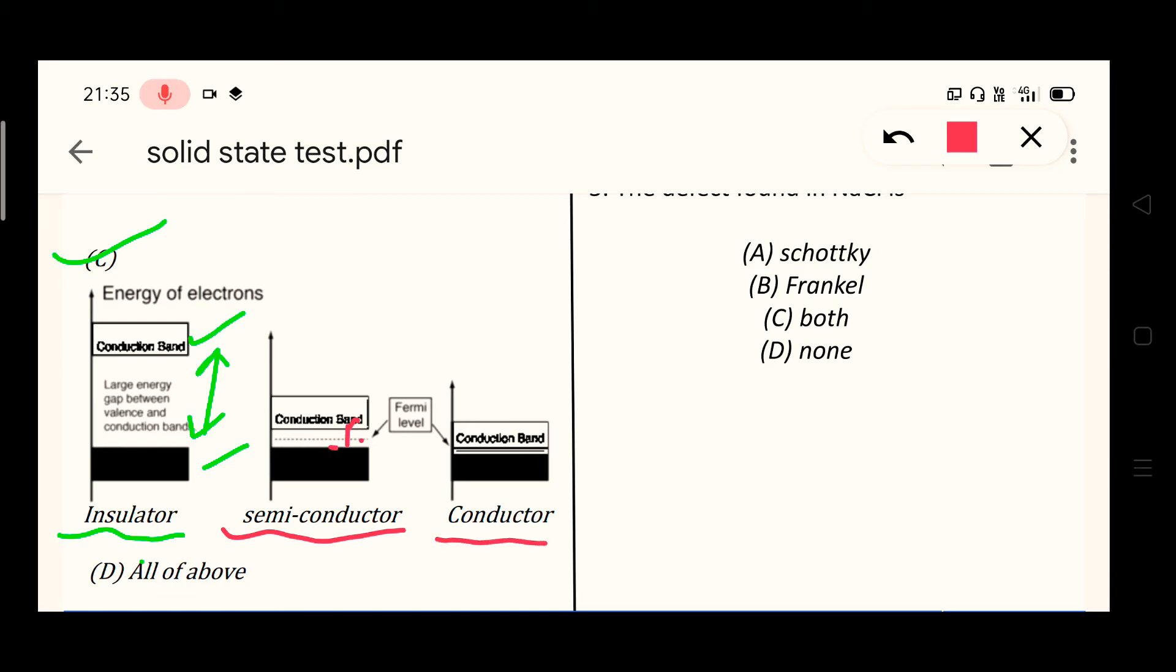And in conductor there is no gap or partially overlapped conduction band and valence band. So there is no energy gap between conduction band and valence band, so it is conductor.